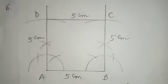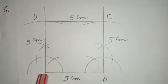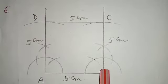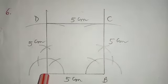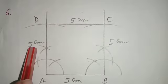How we will do question number 6: draw a line segment AB of 5 cm. At A again we will draw an angle of 90 degrees. At B again we will draw an angle of 90 degrees. With this line segment we cut an arc of 5 cm with the help of compass.